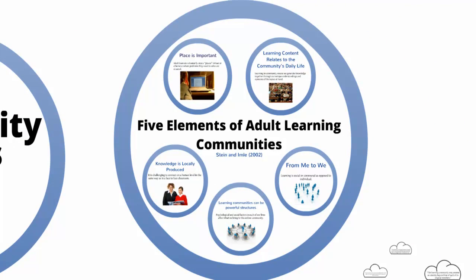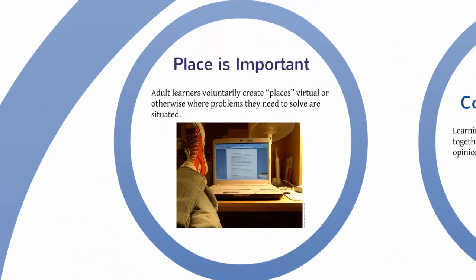Stein and Emil refer to five elements of online communities. Place is important. Adult learners voluntarily create places that are virtual or otherwise where problems they need to solve are situated. These learning spaces emerge in organizations and communities. It's my job as the facilitator to create the context for you to identify the problems you wish to research. Think how the place for each of you will be unique while you watch the videos asynchronously, yet you will come together for tutorial in the same place to discuss what you've learned. So this neutral space is owned by the learning community.